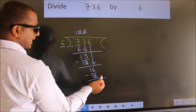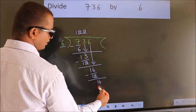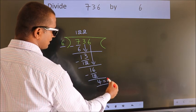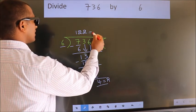No more numbers to bring it down. So we stop here. This is our remainder. This is our quotient.